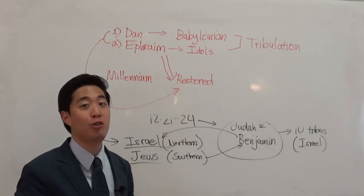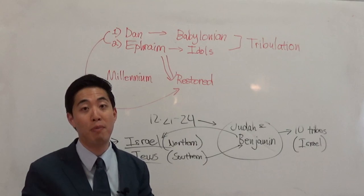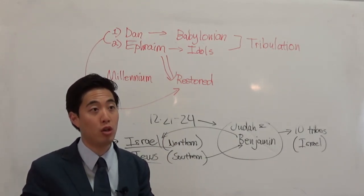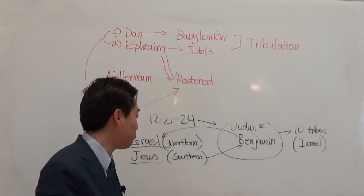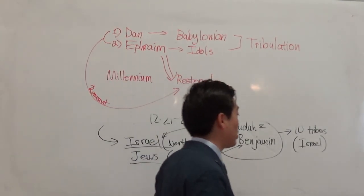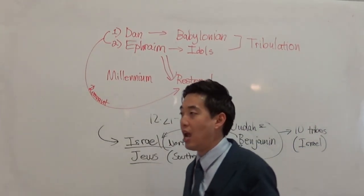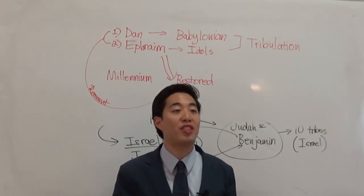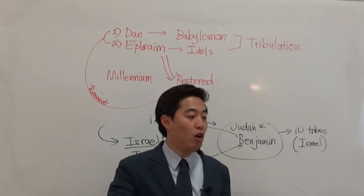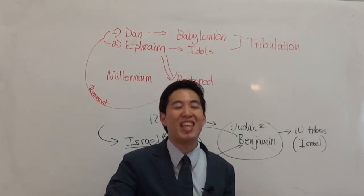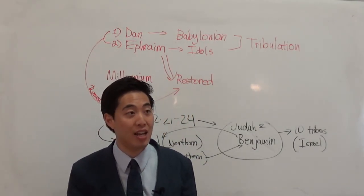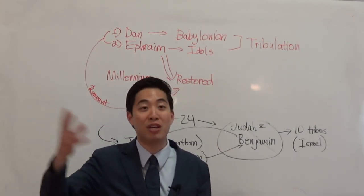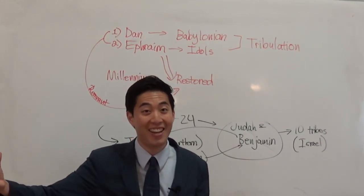In response, God raises up 144,000 Jews in Revelation 7, along with the two witnesses — Moses and Elijah. Moses represents Old Testament law for Judaism; Elijah revives that old testament faith for the Jews. Judaism, while mixed with some Babylonian practices, originated from the Old Testament.